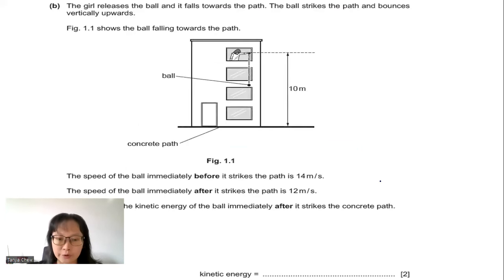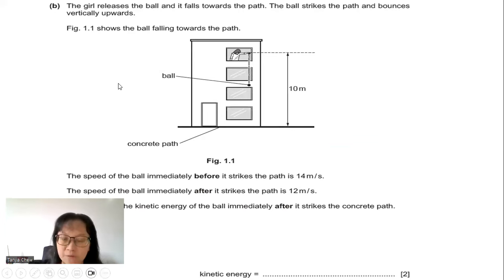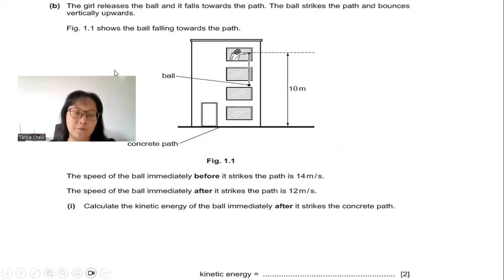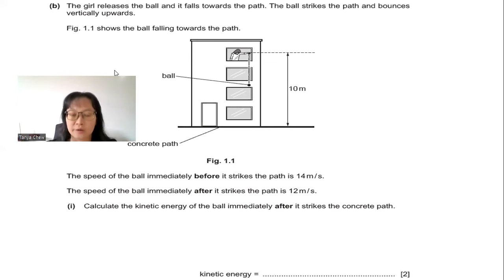Part B: The girl releases the ball and it falls towards the path. The ball strikes the path and bounces vertically upwards. The speed immediately before striking is 14 m/s, and the speed immediately after striking is 12 m/s. Calculate the kinetic energy of the ball immediately after it strikes the concrete path.